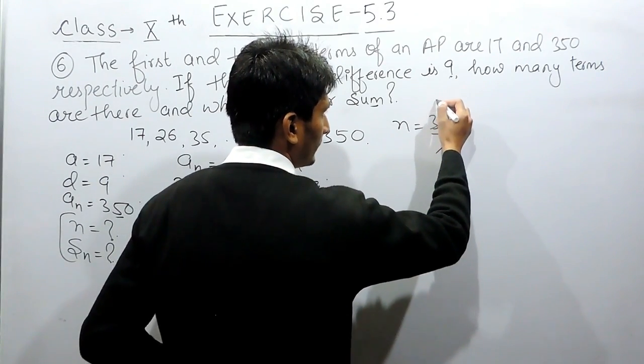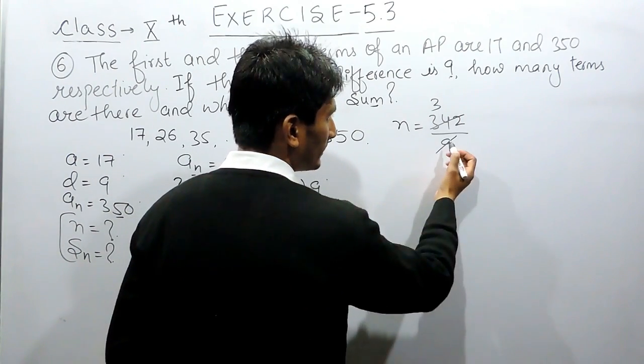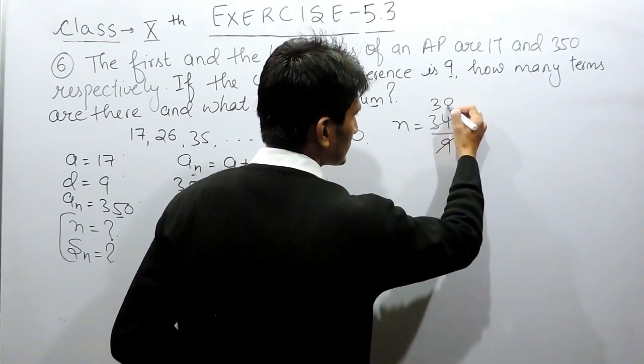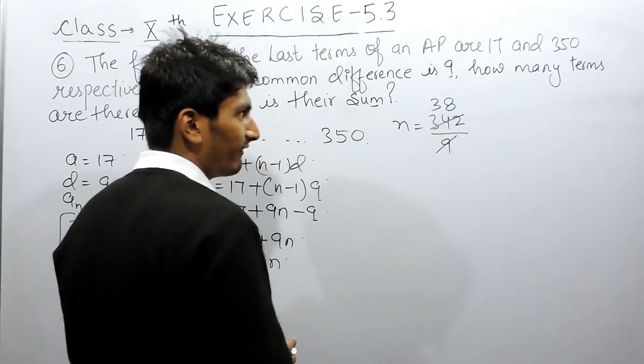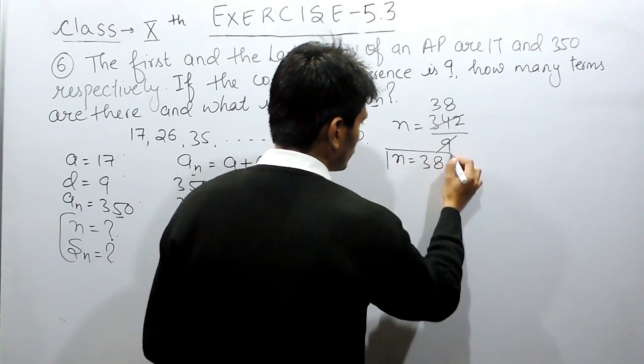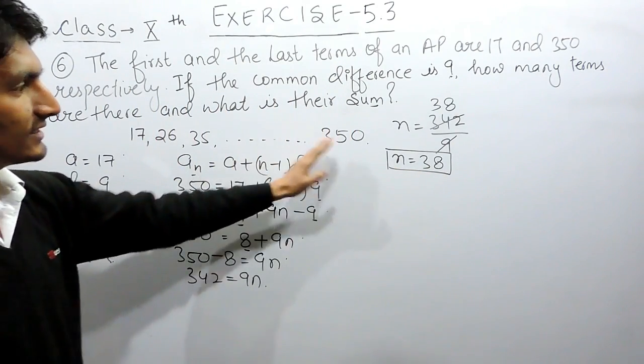So, this can be solved, cancelled out, 3, 9, 3 times is 27, carry 8, carry 7 and this is 8 times is 72. So, the number of terms here must be equals to 38. So, there must be 38 terms in this AP.